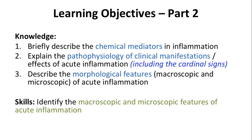For this part of the lecture, the learning objectives are as follows. At the end of this lecture, you should be able to briefly describe the chemical mediators of inflammation, to explain the pathophysiology of clinical manifestations and effects of acute inflammation including the cardinal signs, to describe the morphological features both gross and microscopic of acute inflammation, and skill-wise, to identify the microscopic features of acute inflammation.